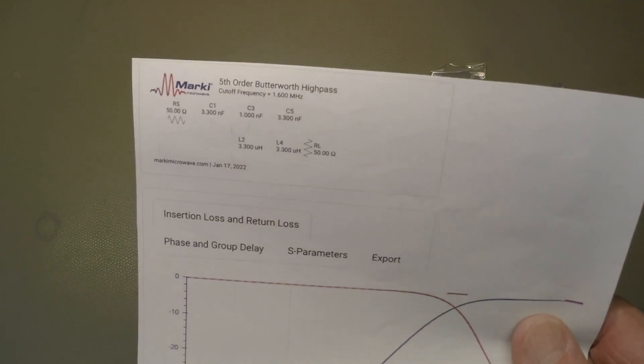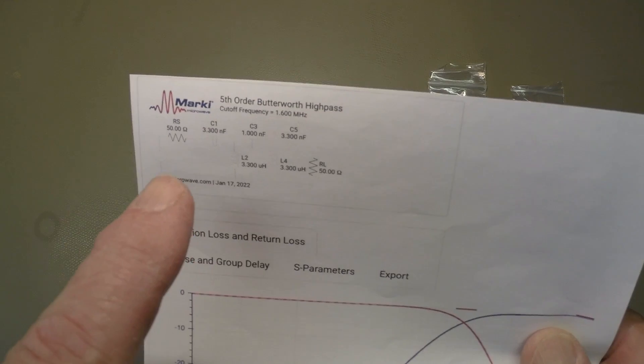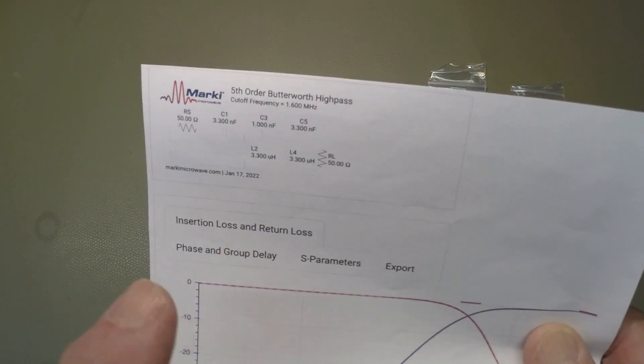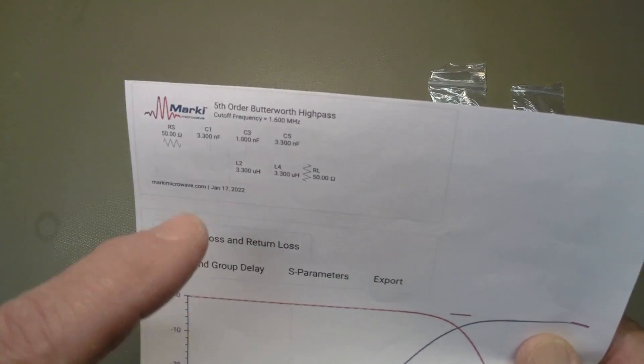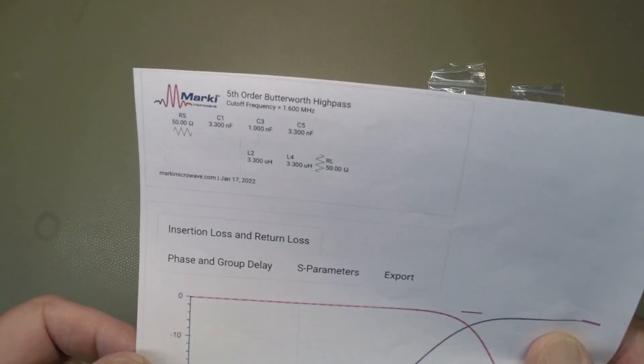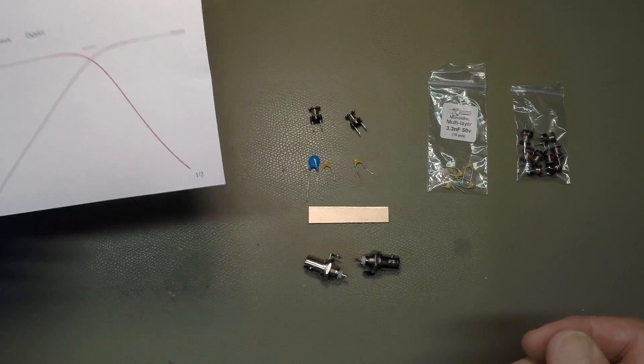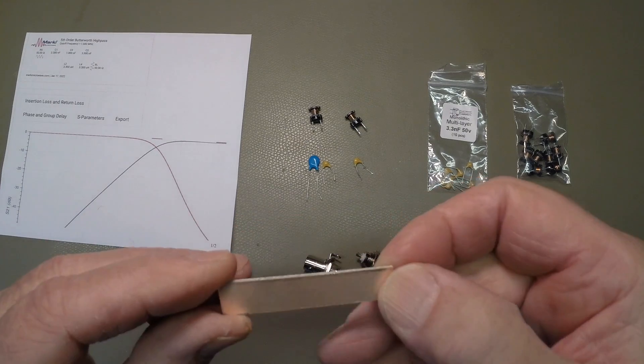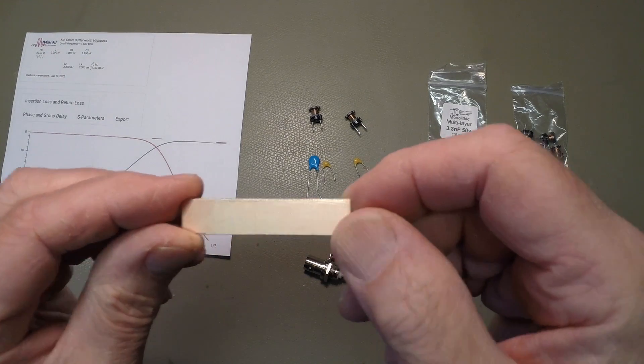So the design is fairly straightforward, 50 ohm input and output impedances, essentially three capacitors, 3.3 nF, two of those are 1 nF, and two inductors. We're going to build it on this piece of single-sided FR-4 plane board.